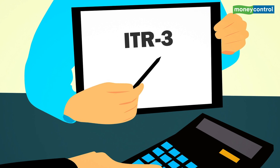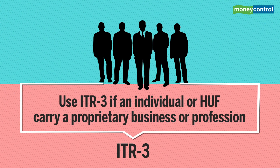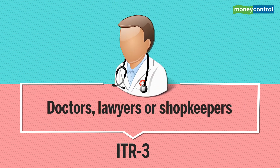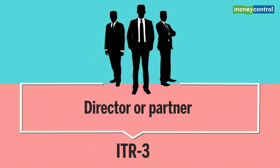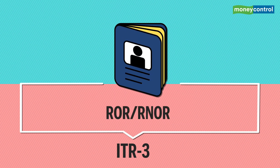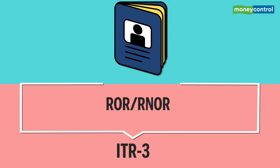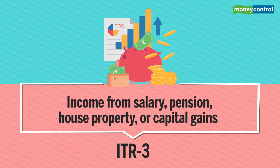Use ITR-3 if an individual or a Hindu undivided family carries a proprietary business or profession — it includes doctors, lawyers, or shopkeepers. Individual directors in a company or partners in a firm can use this form. Non-residents and residents can use this form. Assessees who have income from salary, pension, house property, or capital gains besides income from profession and business can also use ITR-3.